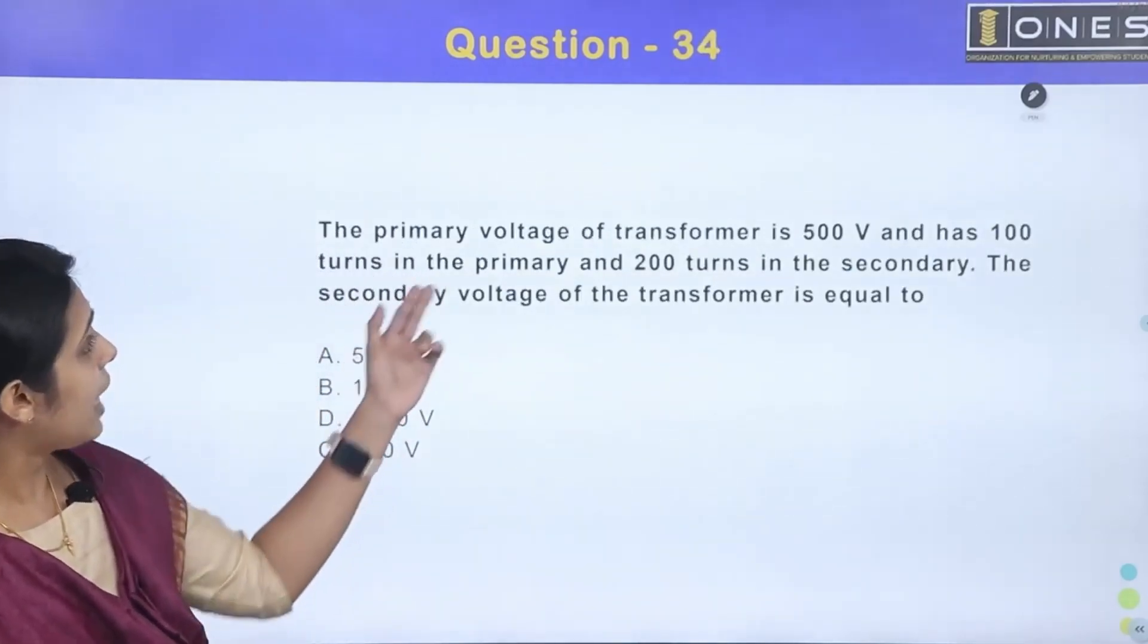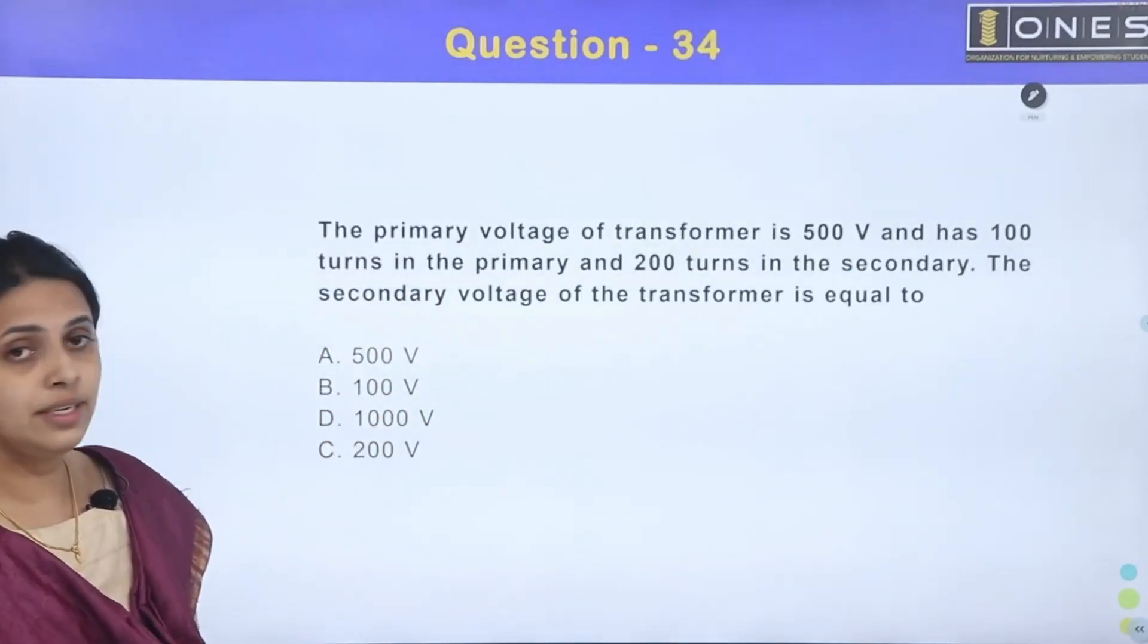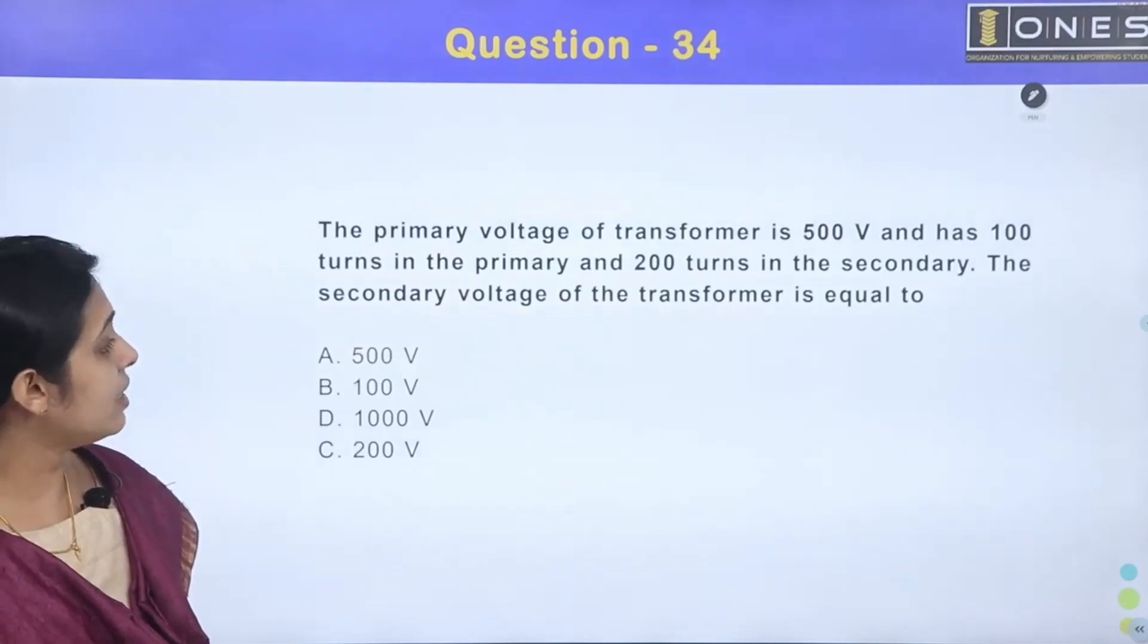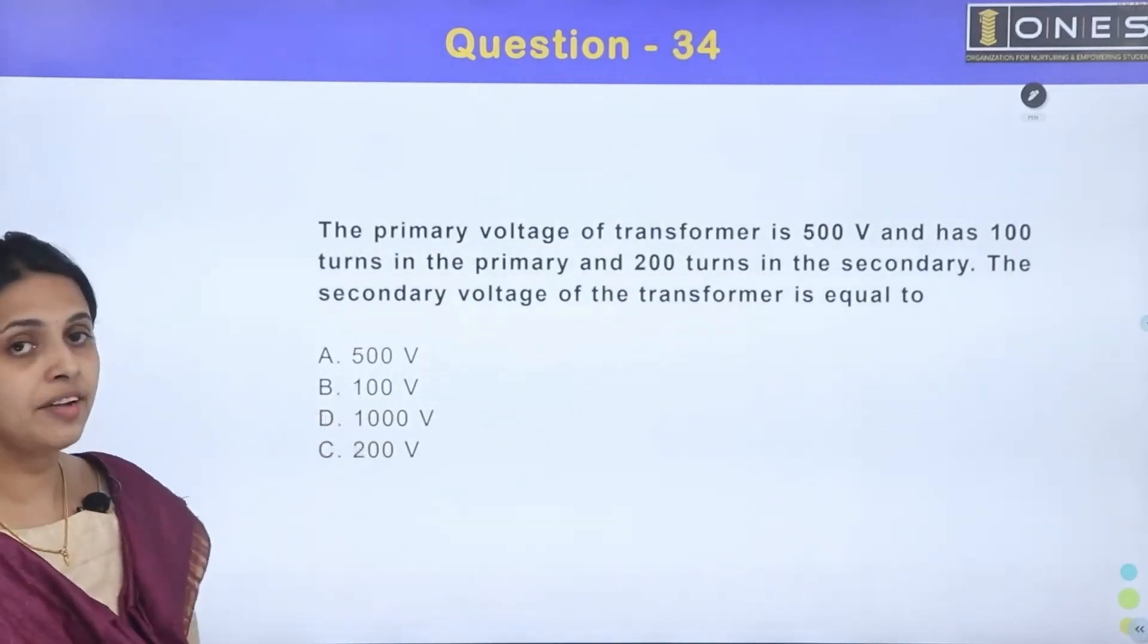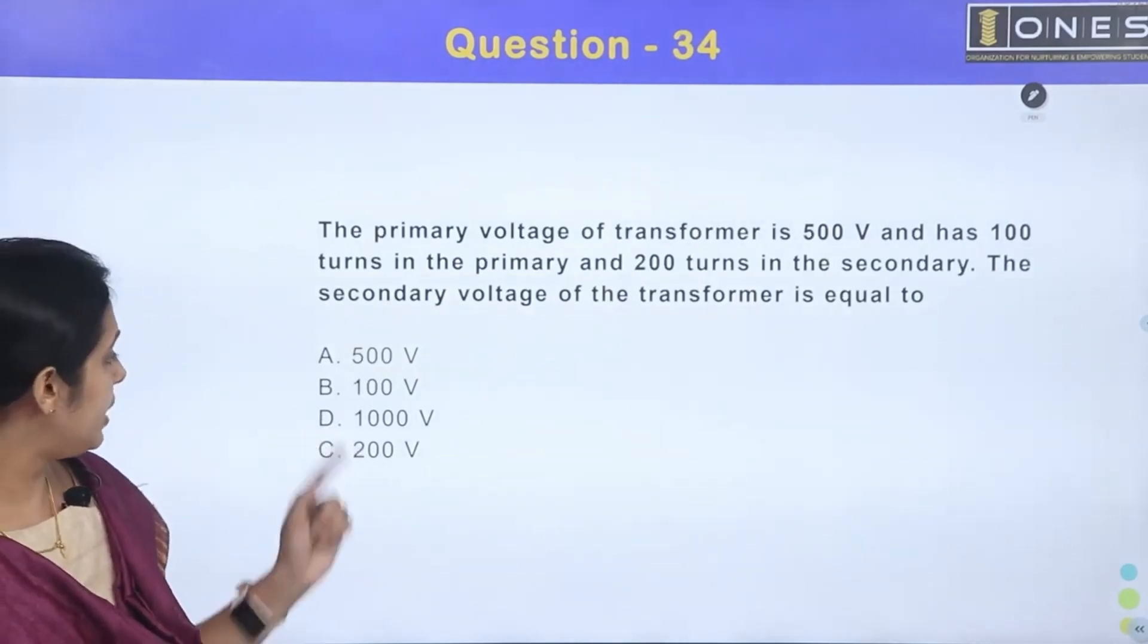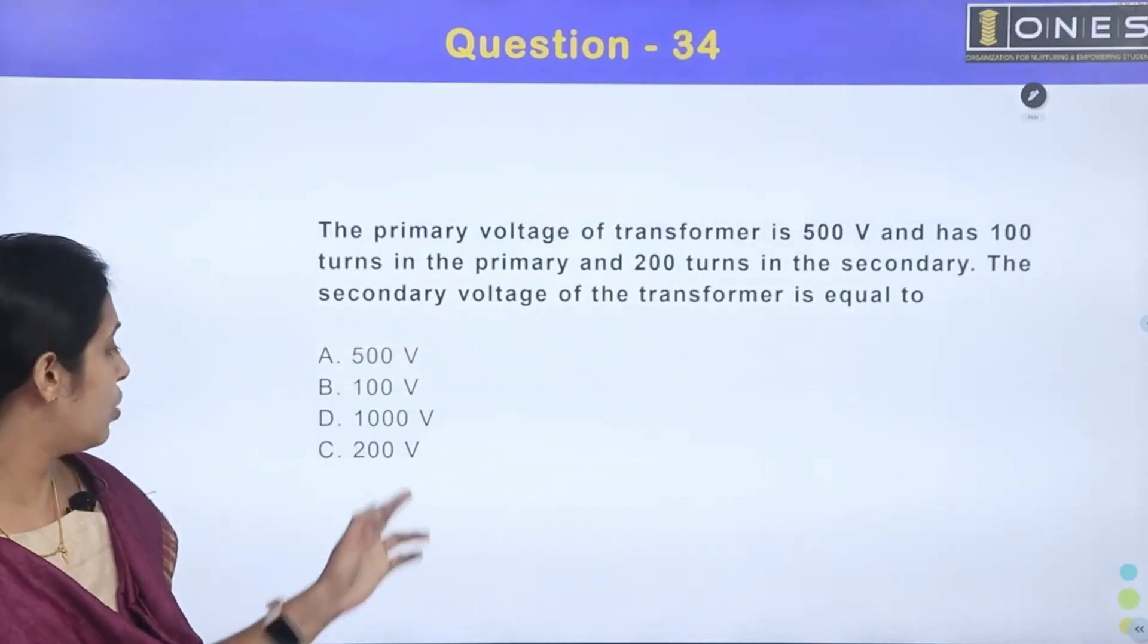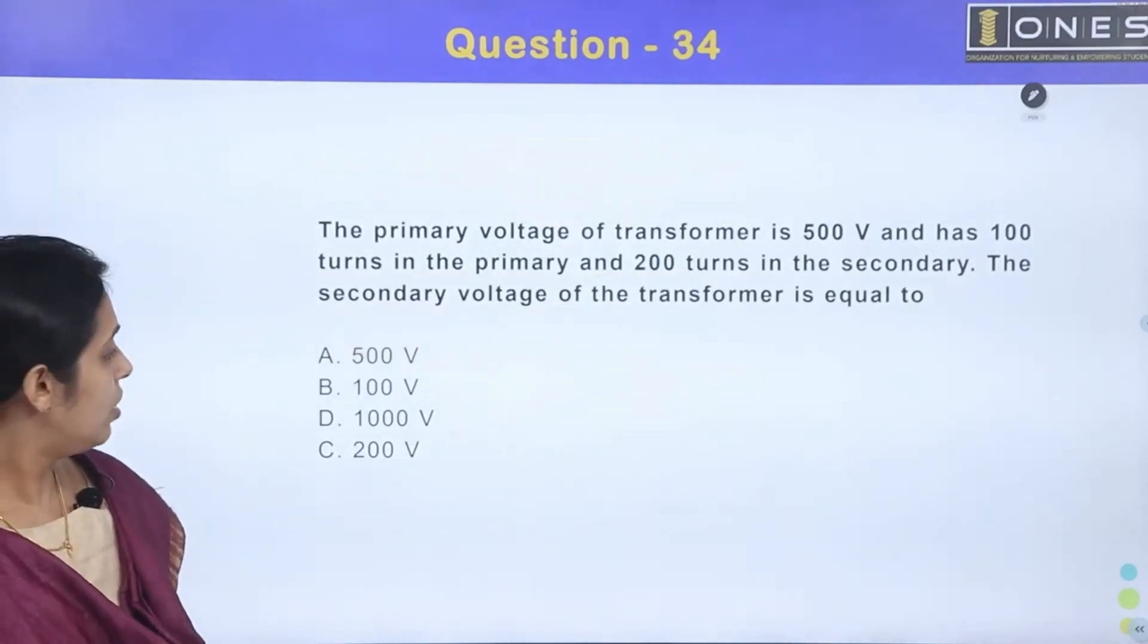Next question. The primary voltage of transformer is 500 volt and has 100 turns in the primary and 200 turns in the secondary. The secondary voltage of the transformer is: Option A 500 volt, Option B 100 volt, Option D 1000 volt, and Option C 200 volt.